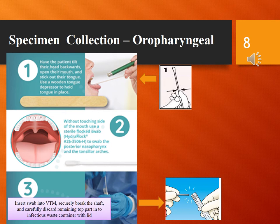Step 2: Without touching the side of the mouth, use a sterile flocked swab to swab the posterior nasopharynx and the tonsillar arches. Step 3: Insert the swab into VTM, securely break the shaft, and carefully discard the remaining top part into the infectious waste container with lid.